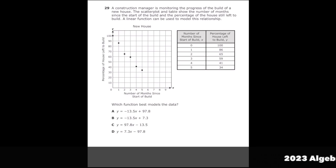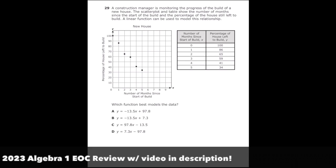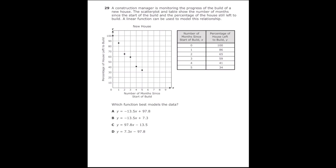This is number 29 from the 2022 Algebra 1 EOC. A construction manager is monitoring the progress of the build of a new house. The scatter plot and table show the number of months since the start of the build and the percentage of the house still left to build. A linear function can be used to model this relationship. Which function best models the data?